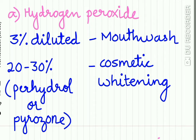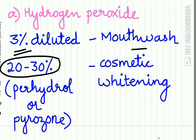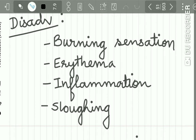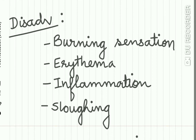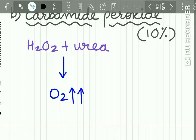Hydrogen peroxide is the primary oxygenating agent. A 3% dilution is used as an antiseptic or anti-plaque agent in mouthwash, while a higher concentration of 20 to 30% is used in cosmetic whitening. The 20–30% hydrogen peroxide plus water is also called perhydrol or pyrozone. Disadvantages include burning sensation, erythema, inflammation of tissues, and in some cases sloughing of the oral mucosa.